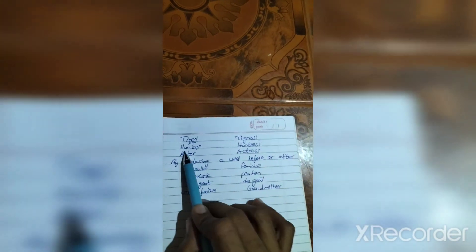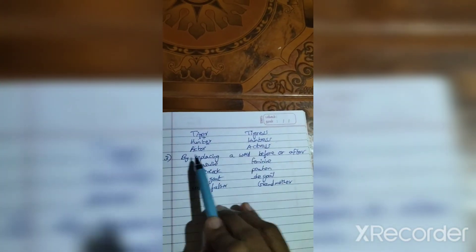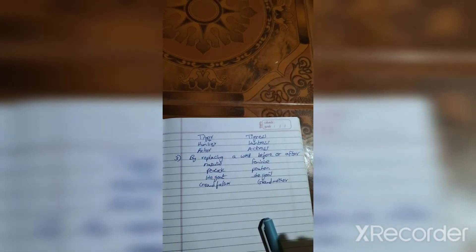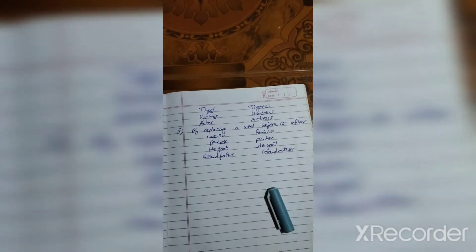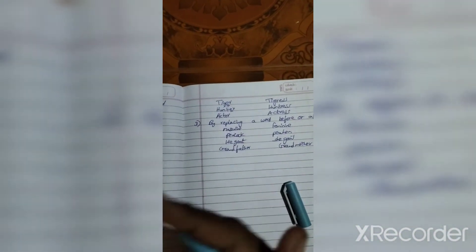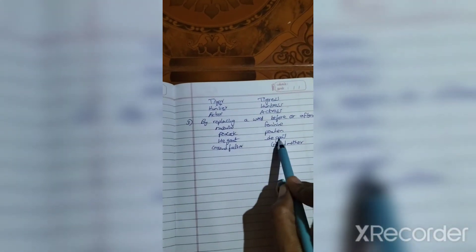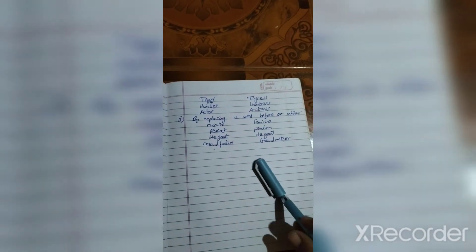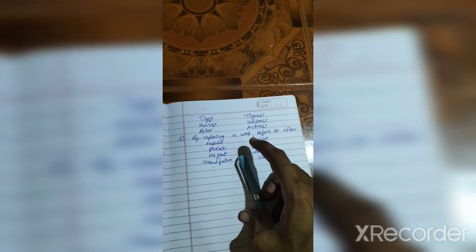By replacing a word before or after. Examples: peacock - peahen (he got, she got), grandfather-grandmother.